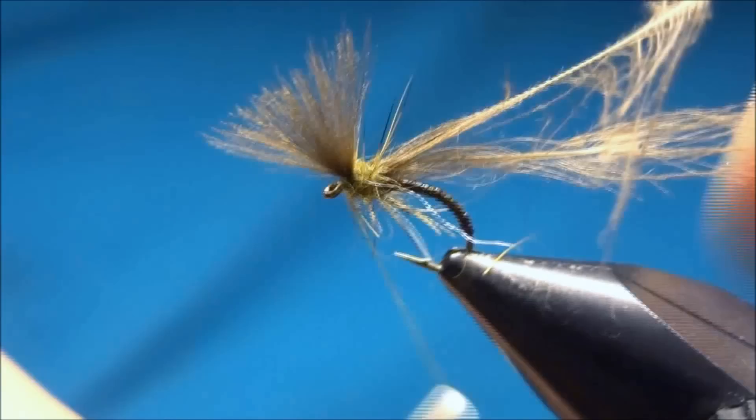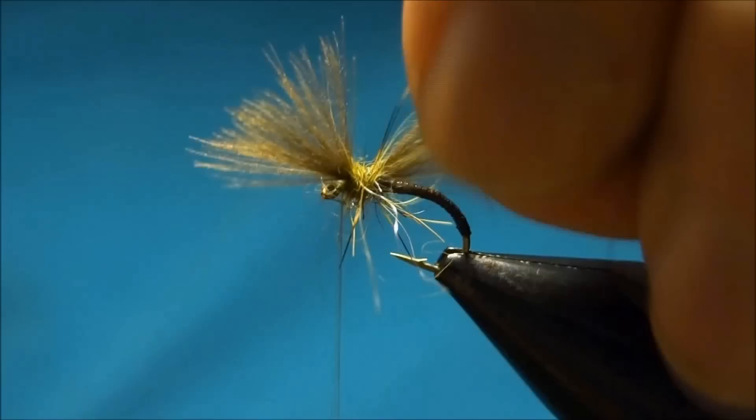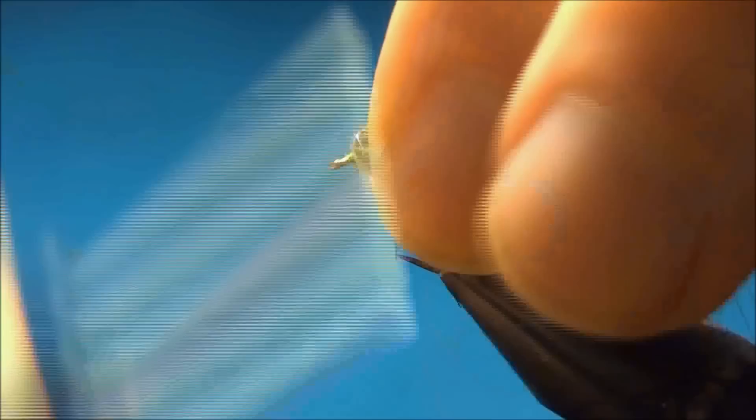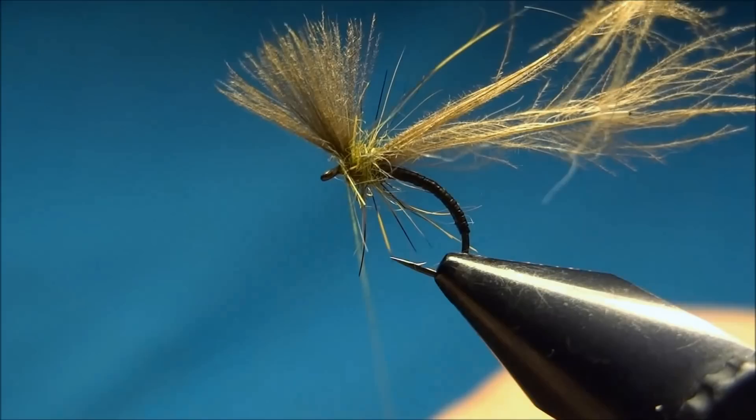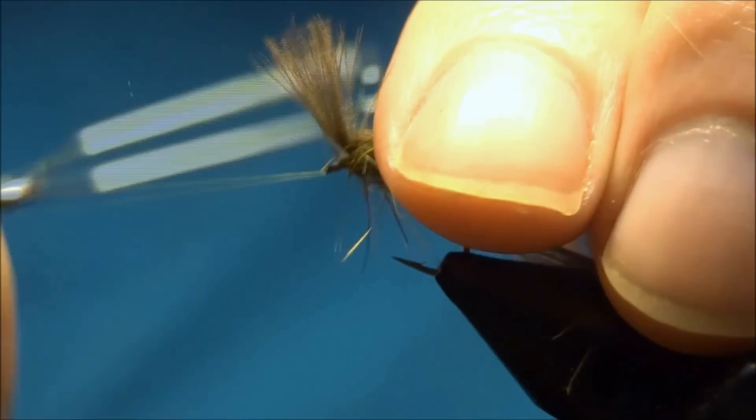These are both in an olive color. Just tie it in fairly loose between the two wings or the wing buds. Then you go up to the eye with your thread and just tie it off.